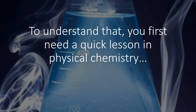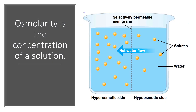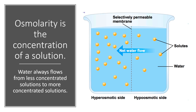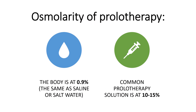To understand what's going on with all of this, you have to first understand some basic physical chemistry. Osmolarity is the concentration of a solution, and water always flows from less concentrated solutions to more concentrated solutions. The body is at 0.9% concentration, and common prolotherapy solutions are at 10% to 15%, so a lot more concentrated than the body — what we would call hyperosmolar.